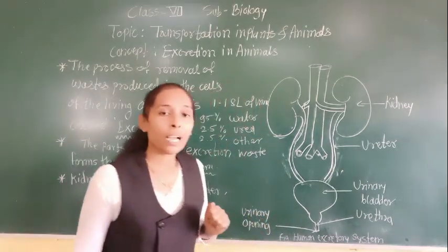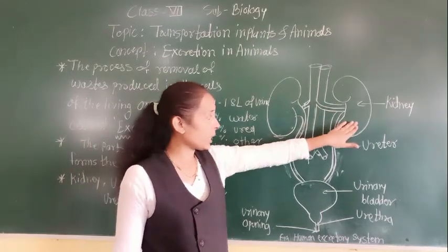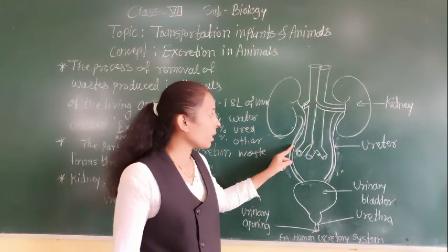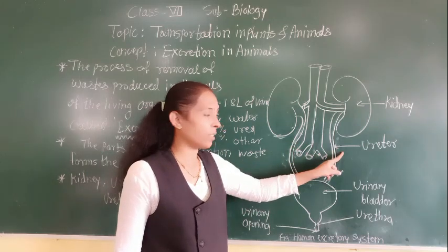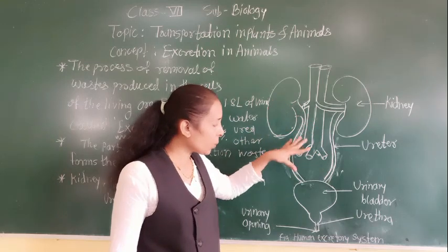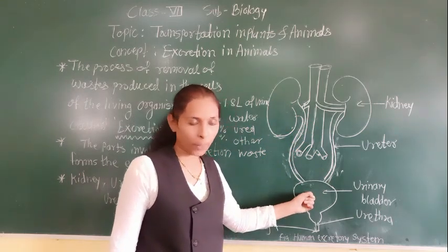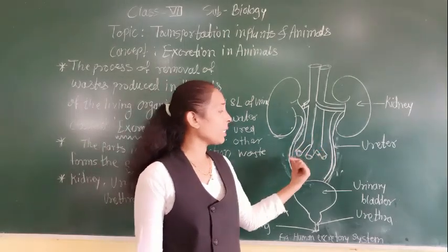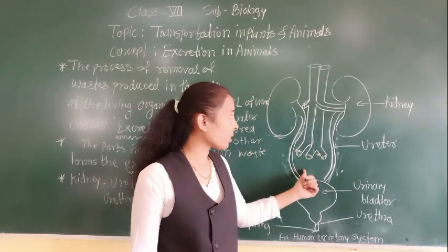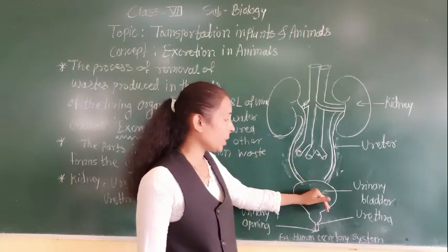Let's see how exactly urine is thrown out. Urine is prepared in the kidney and then transferred to the urinary bladder with the help of the ureter. The ureters are tube-like structures which help to transport the urine from the kidney to the urinary bladder.